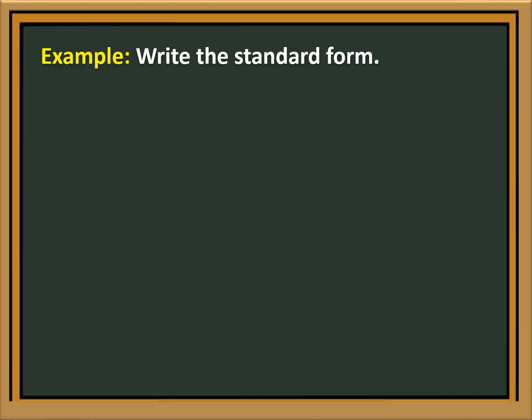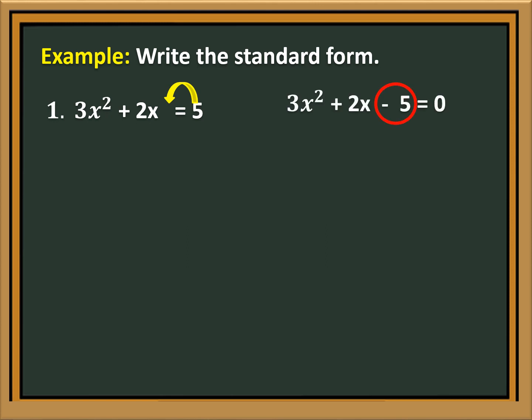Example: write the standard form of 3x squared plus 2x is equal to 5. First, transpose 5 to the left side of the equation, so it will become negative 5. Therefore, we will have 3x squared plus 2x minus 5 is equal to 0.